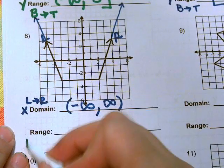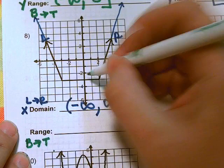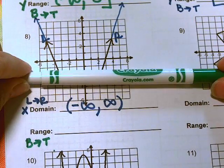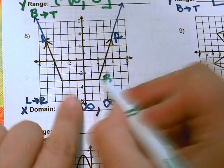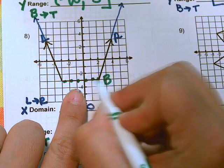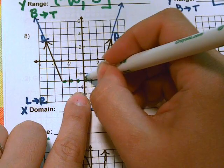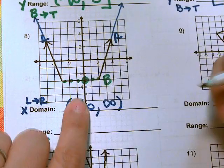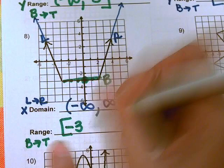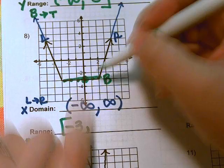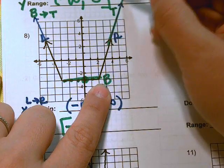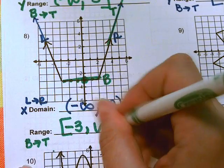The range is from the bottom to the top. The bottom of the graph never goes below the lowest point, which has a y-value of negative 3. We use a bracket because it's solid. Going upward, the graph keeps going, so positive infinity.